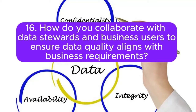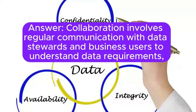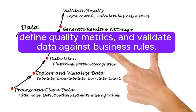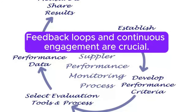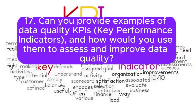16. How do you collaborate with data stewards and business users to ensure data quality aligns with business requirements? Answer: Collaboration involves regular communication with data stewards and business users to understand data requirements, define quality metrics, and validate data against business rules. Feedback loops and continuous engagement are crucial.